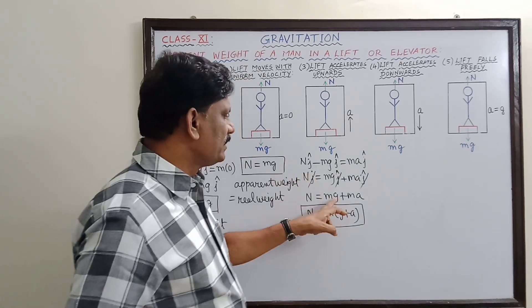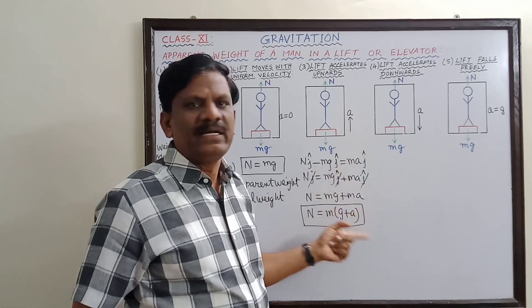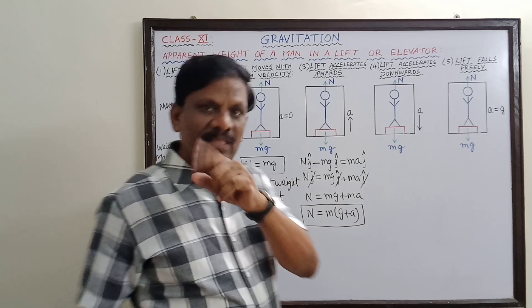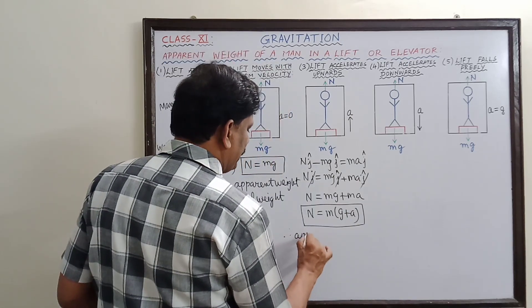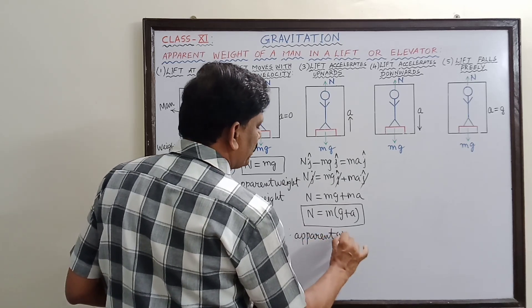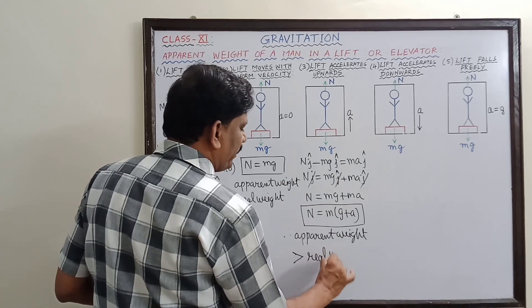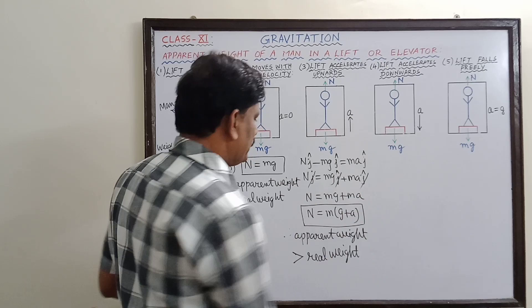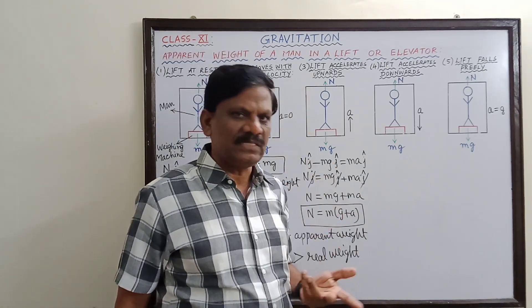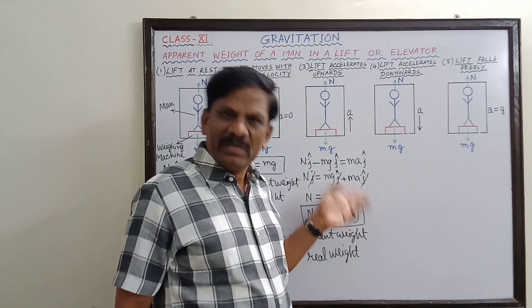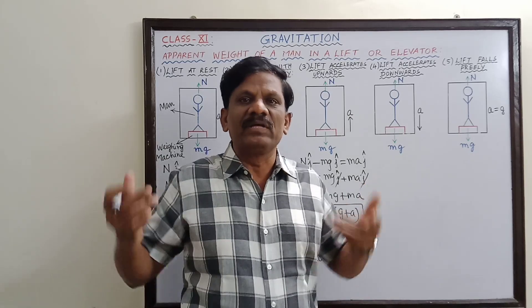Here, mg is the actual weight of the person, and ma is added to it, so naturally the apparent weight must be greater than the actual weight. Therefore, when the lift accelerates upwards, the apparent weight is greater than the real weight. This is why sometimes when you travel in a lift, you feel heavier — it means the lift is accelerating upwards.